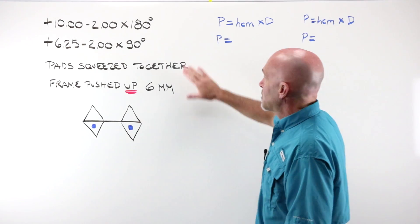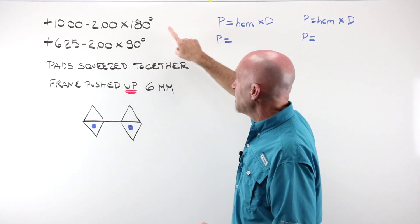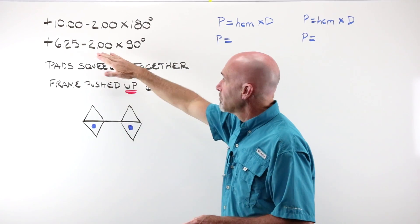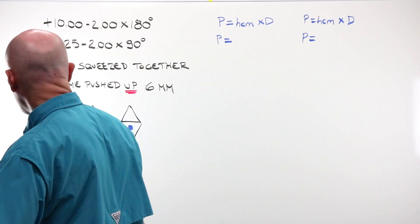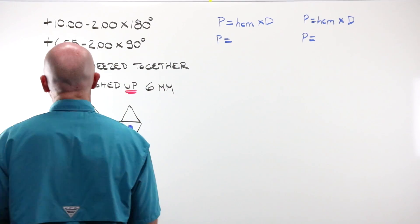The question is, I have a prescription of plus 10, minus 2 at 180 in my right. In my left, I have a plus 6.25, minus 2 at 90.